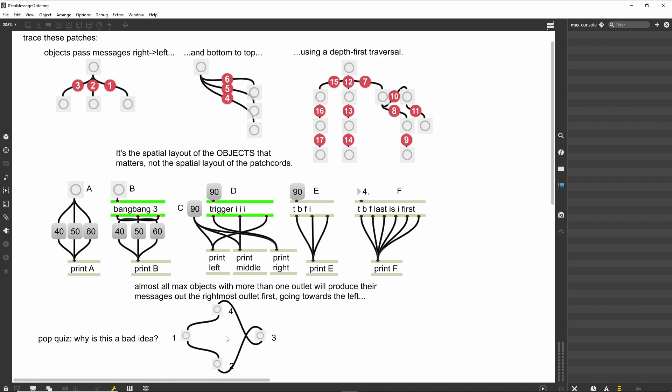Summary. A deep understanding of message ordering rules is necessary to create properly functioning patches. The right to left, bottom to top, go to the end order is the implicit rule for message passing, but you can use objects like bang bang and trigger to make the ordering explicit. In all cases, however, you need to watch out for feedback loops. They are literal patch killers.